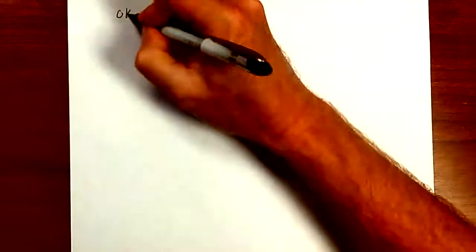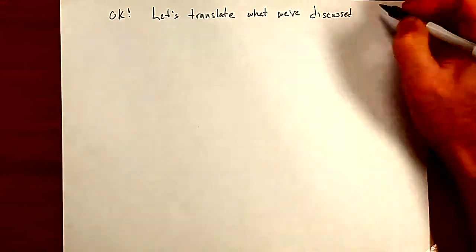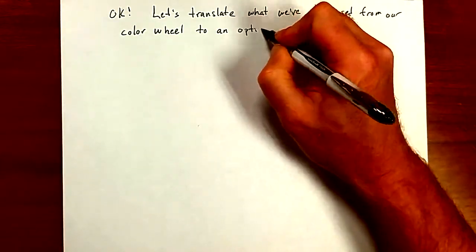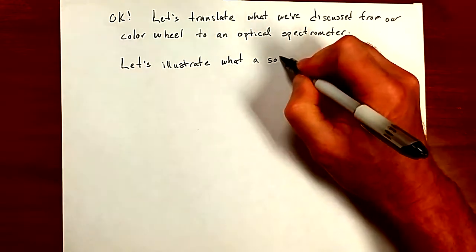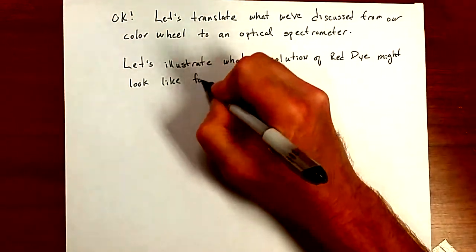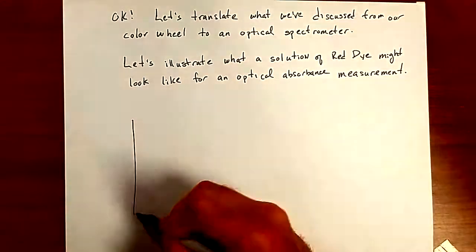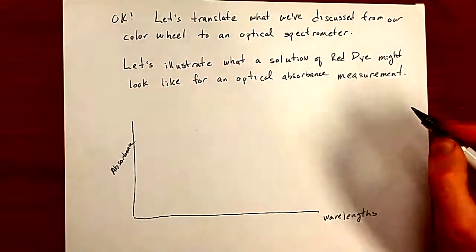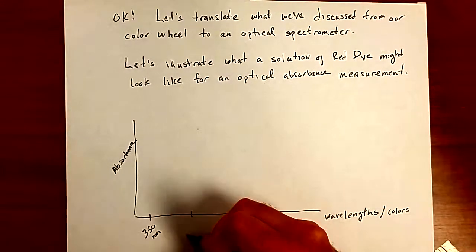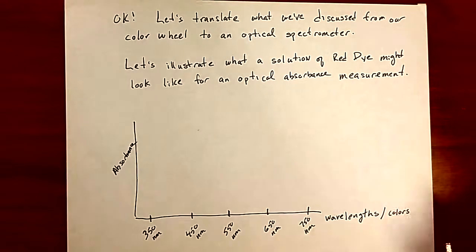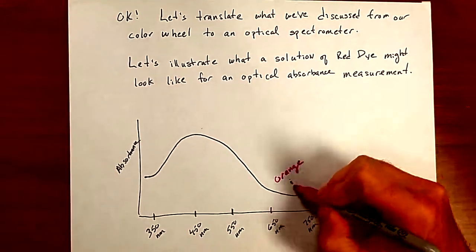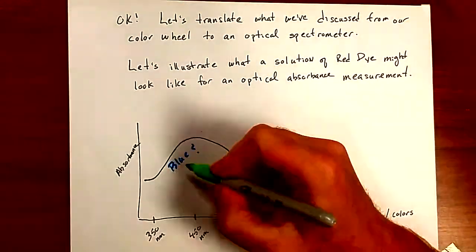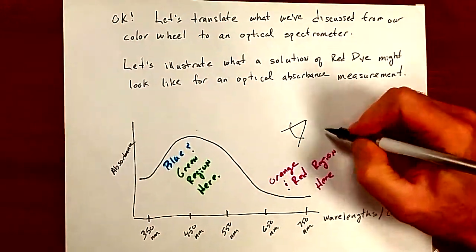Let's translate what we've discussed from our color wheel to an optical spectrometer. Let's illustrate what a solution of red dye might look like for an optical absorbance measurement. The material is absorbing blue and green.